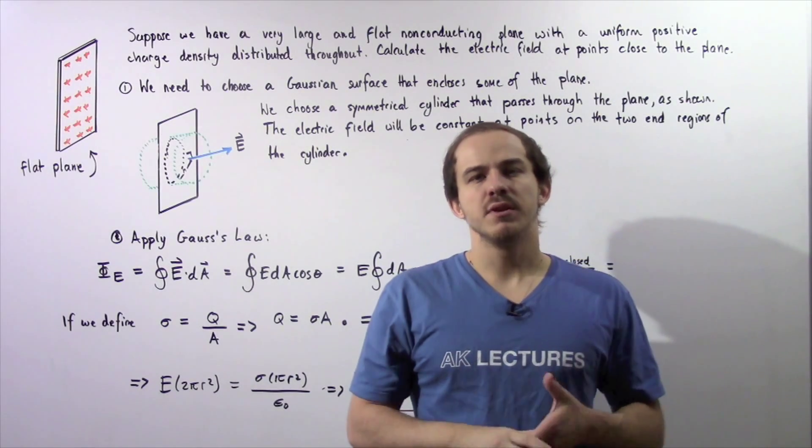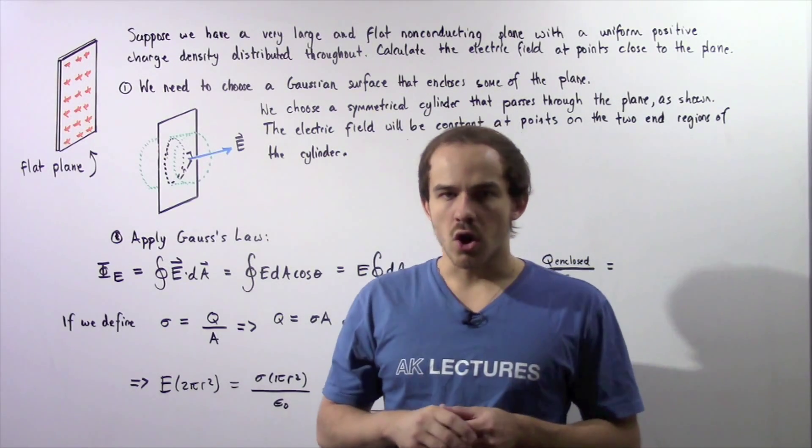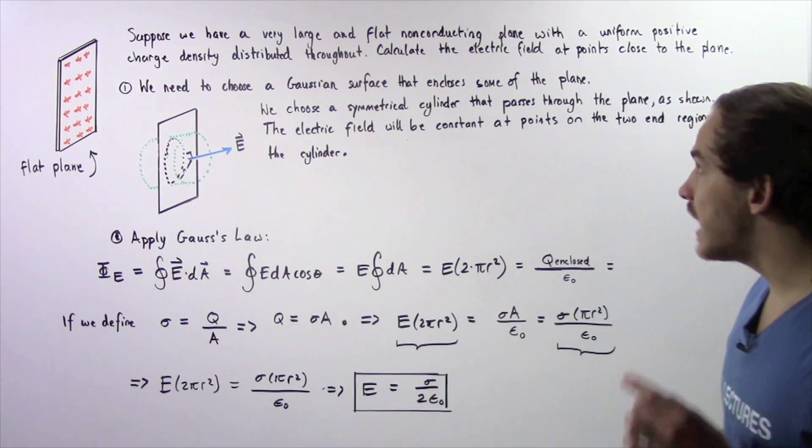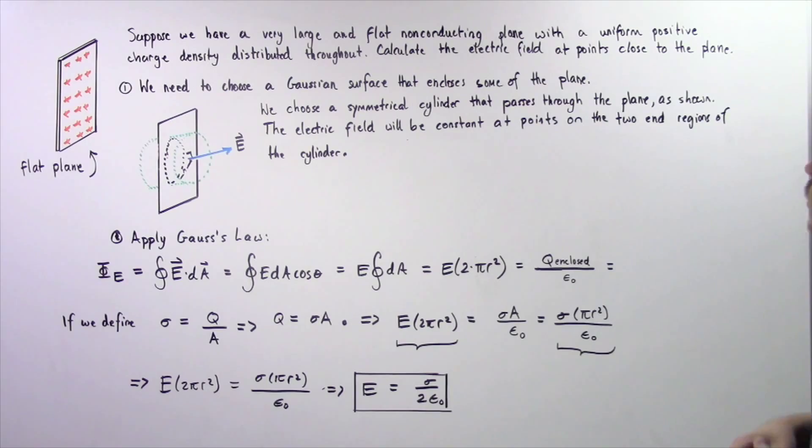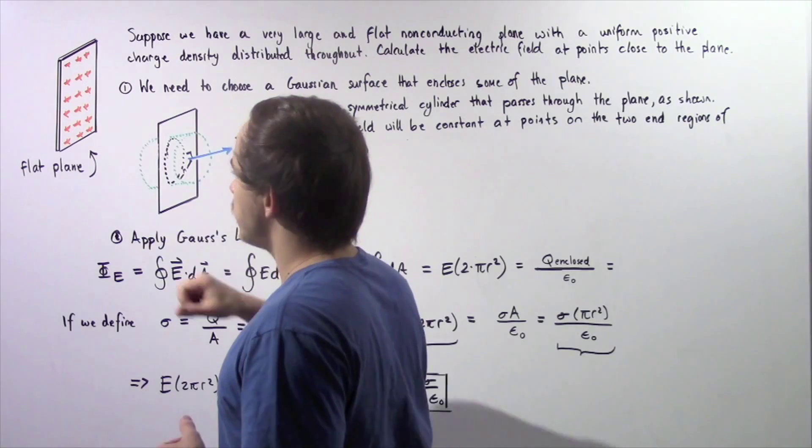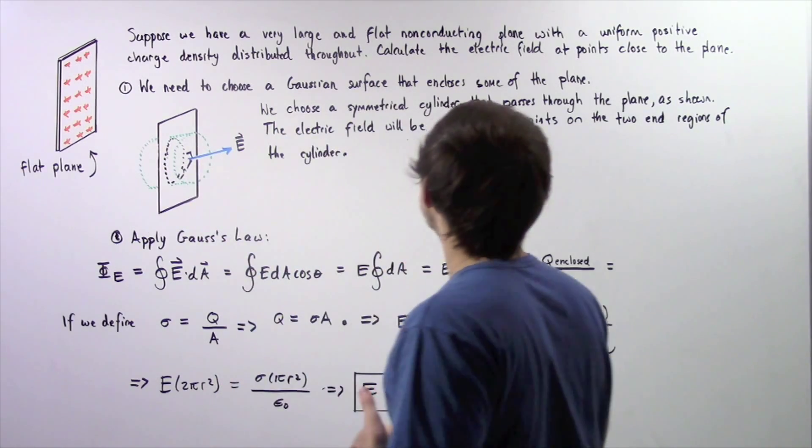Let's look at the following example that deals with Gauss's law. Suppose we have a very large and flat non-conducting plane with a uniform positive charge density distributed throughout the entire plane as shown in the following diagram.